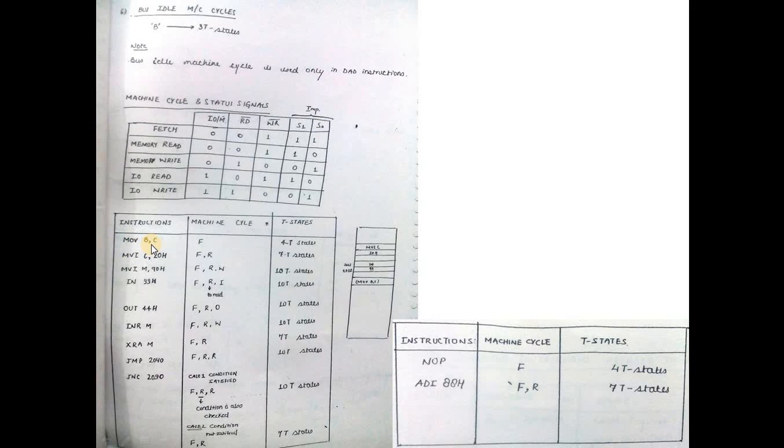Let's take examples. MOV B,C: only fetch, so 4 T-States. MVI: fetch and memory read to get data, so 4 plus 3 equals 7 T-States. LDA (load accumulator from memory): fetch, memory read, and memory read again, so 4 plus 3 plus 3 equals 10 T-States.